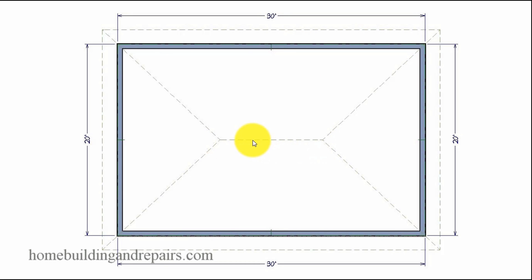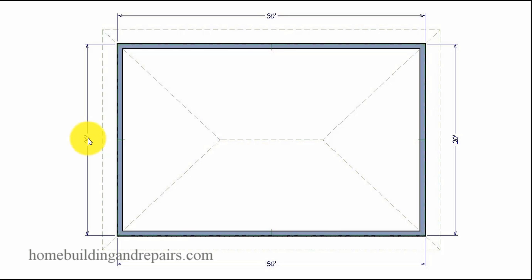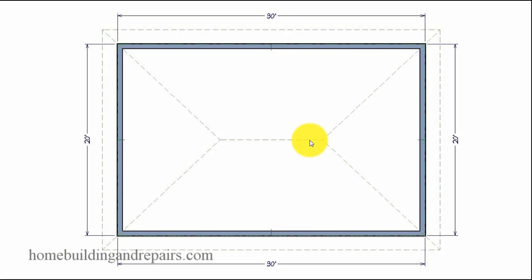The reasoning behind that is the roof ridge is going to be in the center of the building if it's built with the same pitch all the way around. If you have a 4 and 12 pitch all the way around, the ridge will be in the center. The center of a 20-foot wide building is 10 feet — we divide 20 by 2 and get 10 feet. So we subtract the 20 feet and we have our 10 foot ridge.